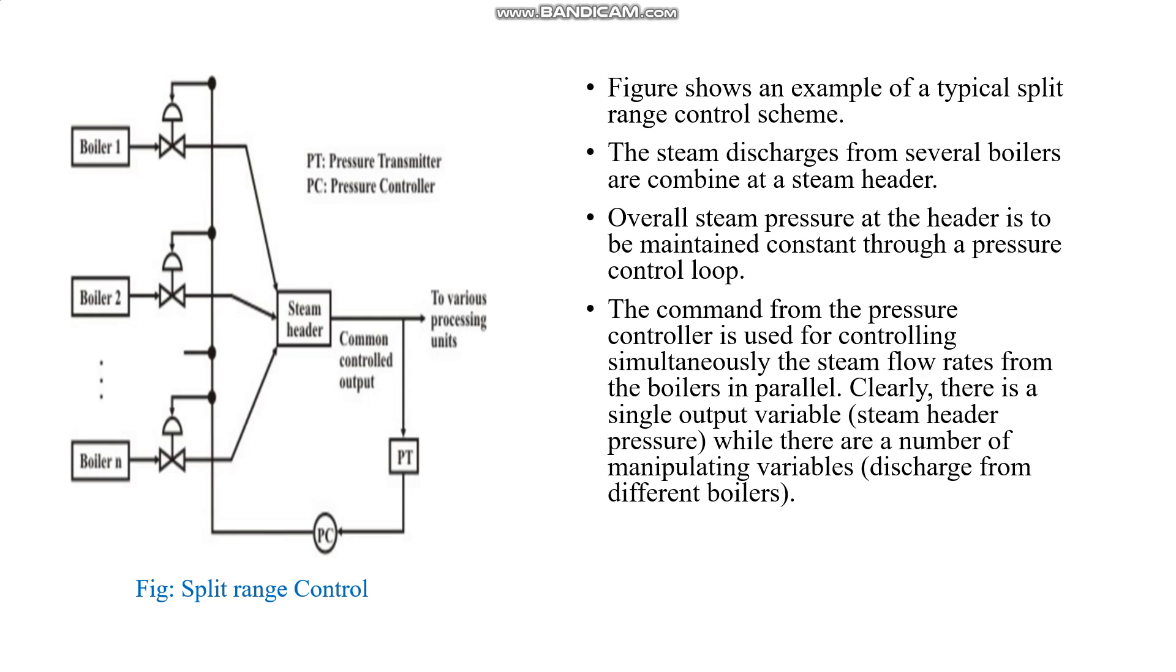Overall steam header pressure is to be maintained constant through the pressure control loop. The command from the pressure controller is used for controlling simultaneously the steam flow rates from the boilers in parallel.